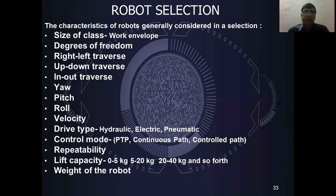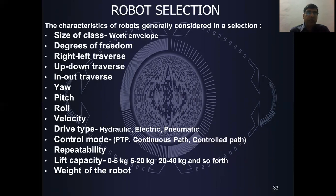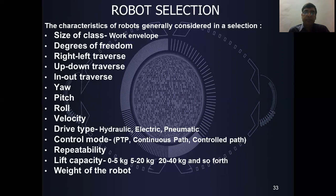When designing and selecting a robot, key parameters include: size or class, workspace, degree of freedom (left-right traverse, up-down traverse, pitch, roll), drive type (hydraulic, electric, pneumatic), control type (point-to-point or continuous control), repeatability, and lift capacity — ranging from 5 to 20 kg or 20 to 40 kg — as well as the overall weight of the robot.